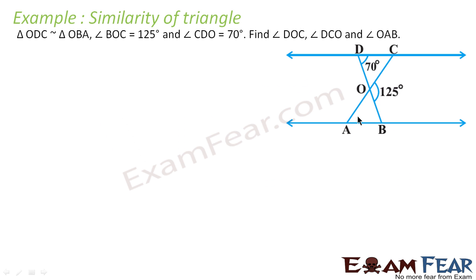It has been given that angle ODC is equal to angle OBA, and angle BUC is equal to 125 degrees. This angle CDO is equal to 70 degrees. We have to find angle DOC. Let this be X, DCO that is Y, and OAB that is Z. Don't assume that DC is parallel to AB — that is not given. The only thing given is that triangle ODC is similar to triangle OBA.